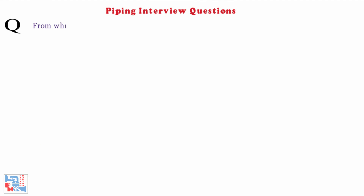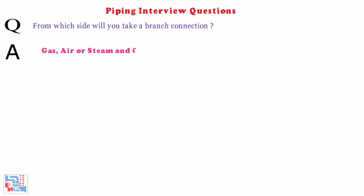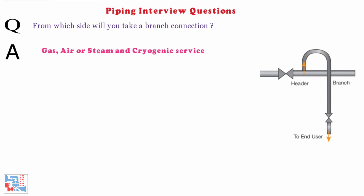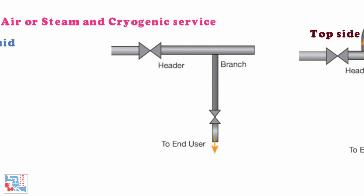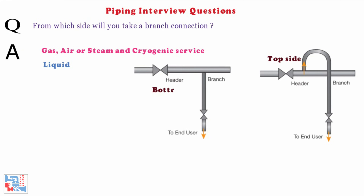Next, from which side will you take a branch connection? For gas, air, steam, and cryogenic services, we take branch connection from the top side. When the fluid is liquid, we take branch connections from the bottom side. But nowadays, you can take top tapping in all cases unless we have a free drain requirement.